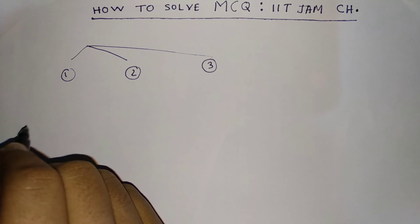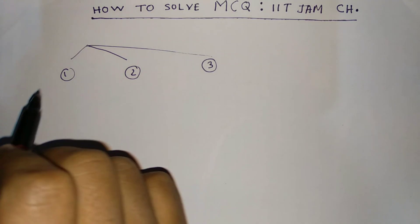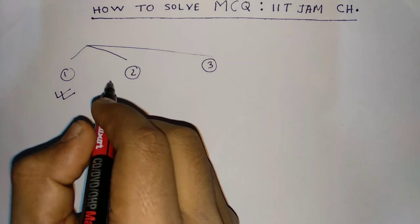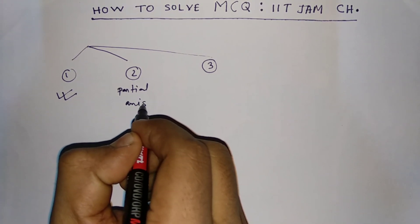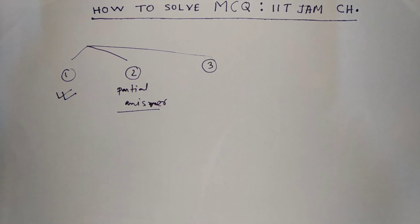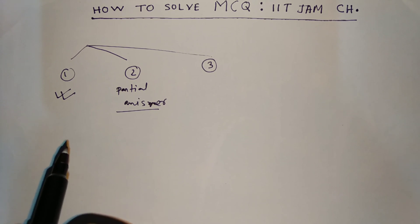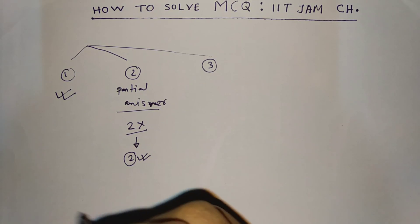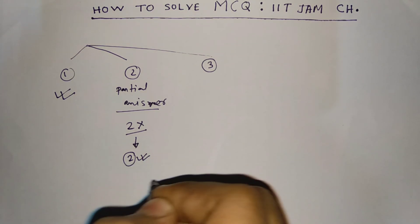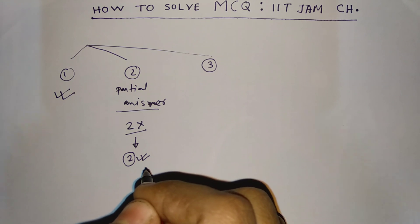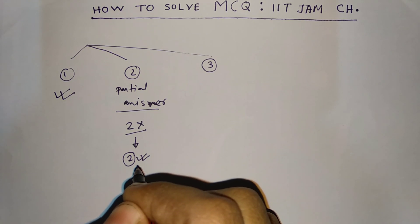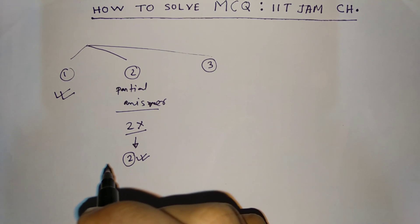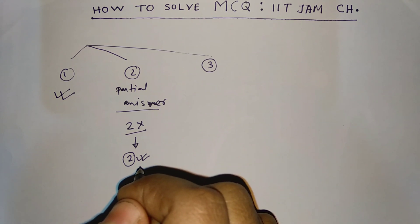In Path 1, if you know the answer to a MCQ question, then it's okay — there will be no problem. But if you know only a partial answer — meaning, suppose there are four options and you know two are incorrect, but you are confused between the remaining two — then what will you do? You may think there is a 50% chance of getting the correct answer and take the risk. But my suggestion is: don't ever try those questions if you are not completely sure. Don't answer them.